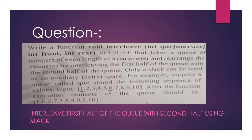The question states that we have been given a queue and we have to interleave the first half of the queue with the second half elements of the queue. That is, we have to mix the elements in a specific order — like one, six, two, seven, three, eight, and so on.